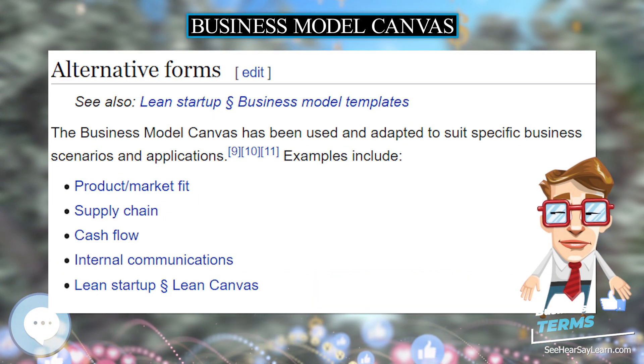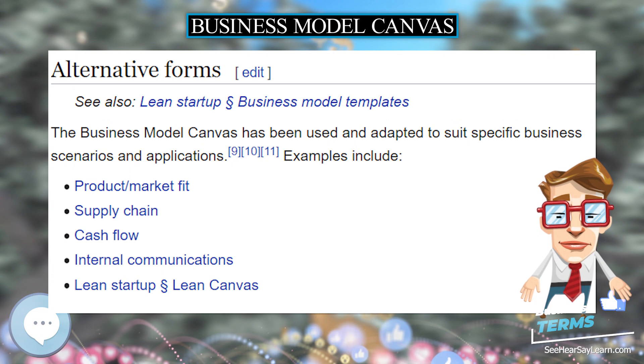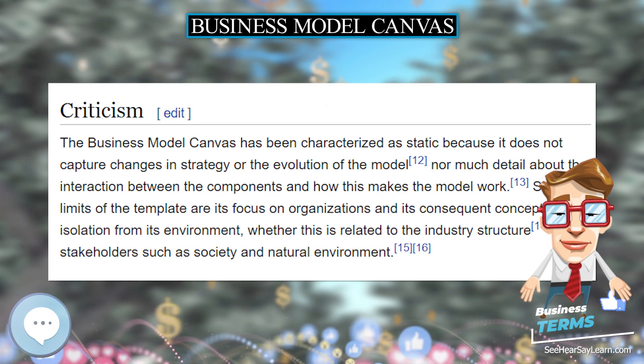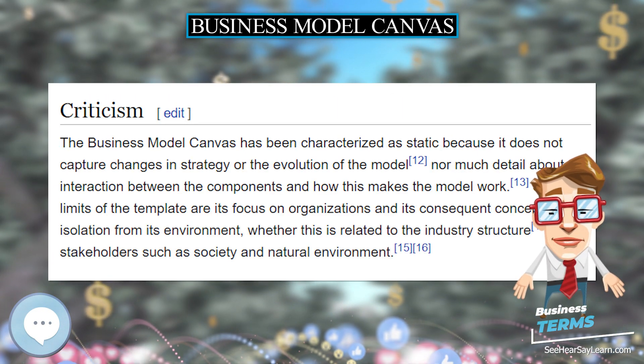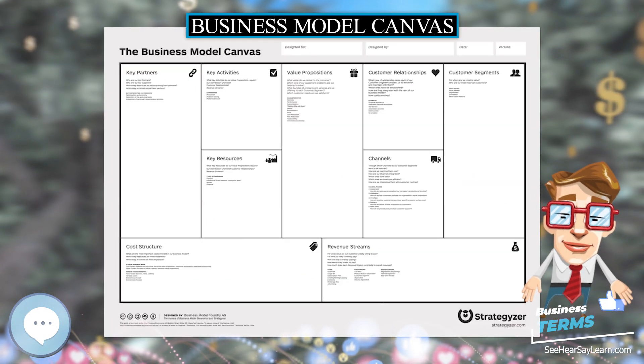Osterwalder's canvas has nine boxes, the name of each is given in bold below. Descriptions below are based largely on the 2010 book Business Model Generation.